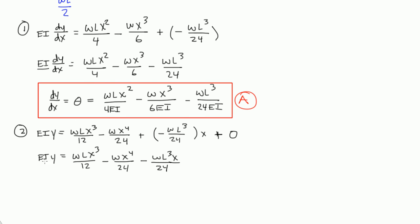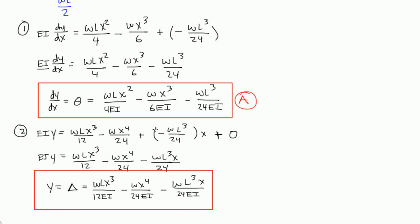And I'm going to bring this EI to the other side and I'm going to get Y. And remember, Y is equal to our deflection at any point. And that's equal to WLx cubed over 12 EI minus Wx to the 4th over 24 EI minus WL cubed X over 24 EI. And this equation I'll call, I'll box it in red, and I'll call this equation B.